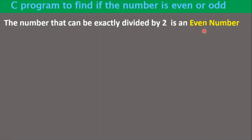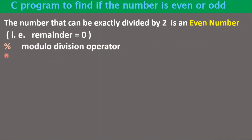In C language, there are different types of operators. Out of those, the modulo division operator helps us to determine the remainder. The percentage operator, which is also called the modulo division operator, will give you the remainder as an answer.